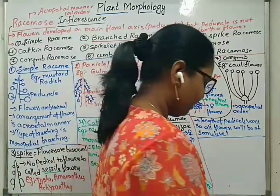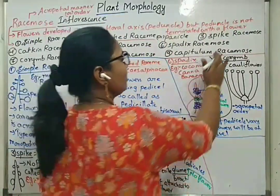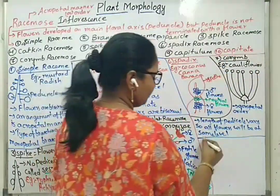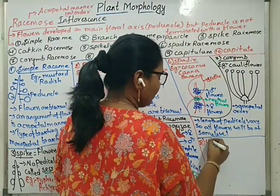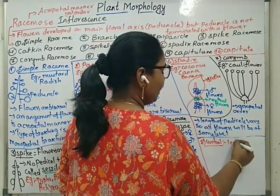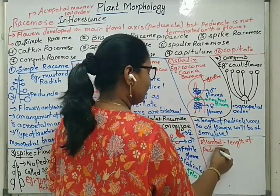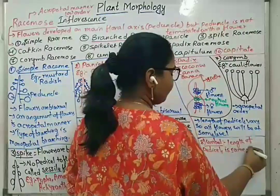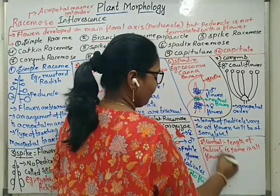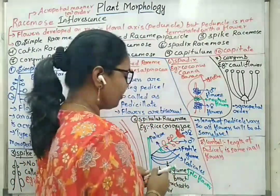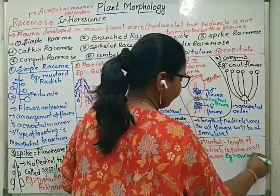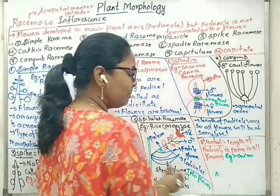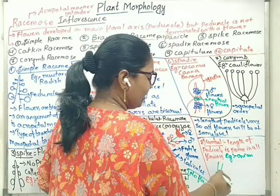Next is umbel type of inflorescence. The length of pedicels of all flowers is the same. Such umbel type of inflorescence is seen in case of onion. In case of carrot and coriander, we see branched umbel.